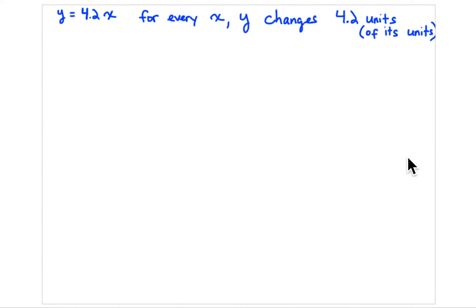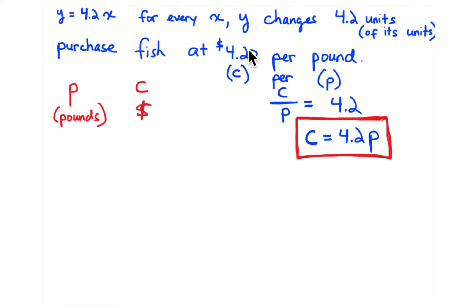Notice this is a proportional relationship: if you don't buy any fish — zero pounds — then you're paying zero dollars. For every unit increase in x, y changes by 4.2 units. So 4.2 dollars per pound means one pound costs four dollars and twenty cents. That is called the unit rate.